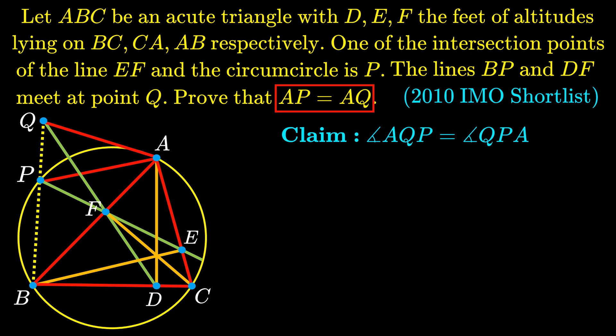Now, because we are given that the points A, P, B and C lie on a circle by the properties of a cyclic quadrilateral, we know that the angle QPA is equal to the angle BCA.